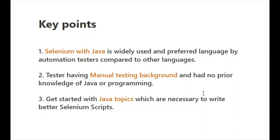First, why Selenium with Java? Java is one of the languages used for writing Selenium automation scripts. Selenium supports many other languages as well, like Python, Ruby, C#, and JavaScript, but Selenium with Java is widely used and the preferred language by automation testers compared to other languages. Testers with a manual testing background and no programming knowledge can just get started with Java topics so they can write better Selenium scripts.